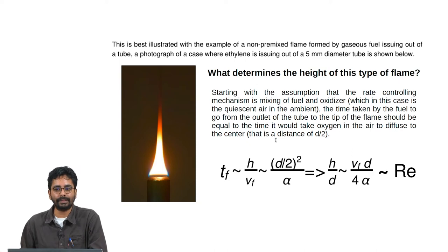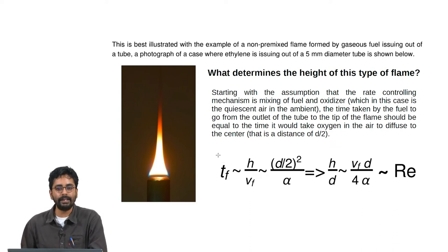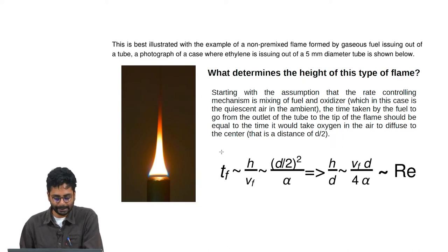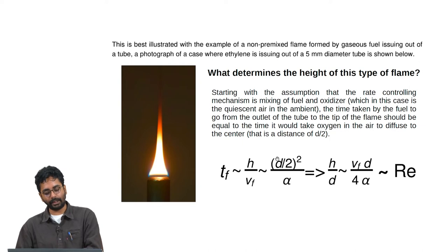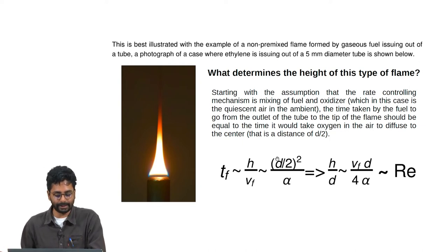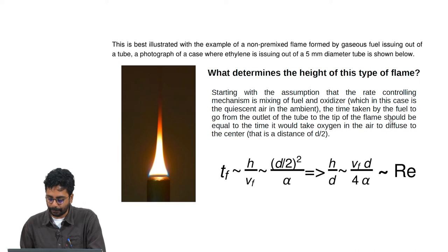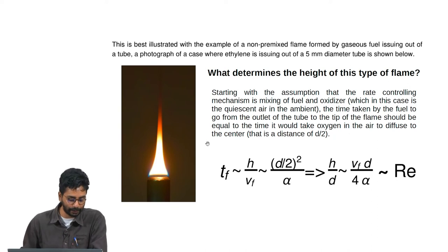The first question is: what determines the height of this type of flame? The principal dependence can be extracted from a simple analysis, starting with the assumption that the rate-controlling mechanism is mixing of fuel and oxidizer with the quiescent ambient air.